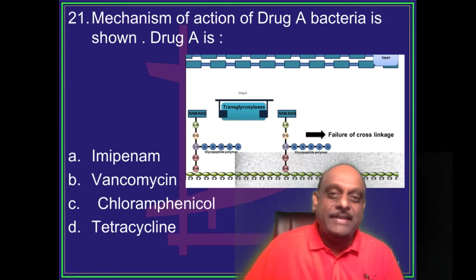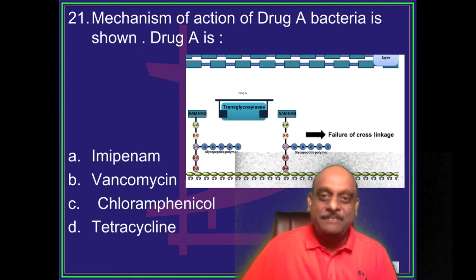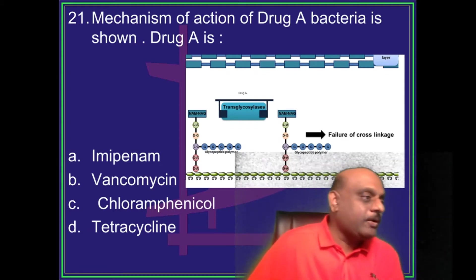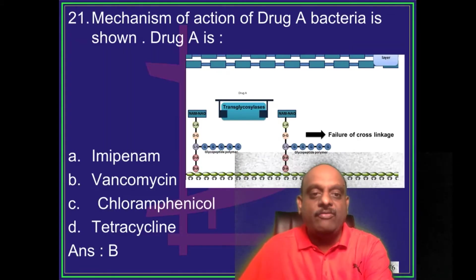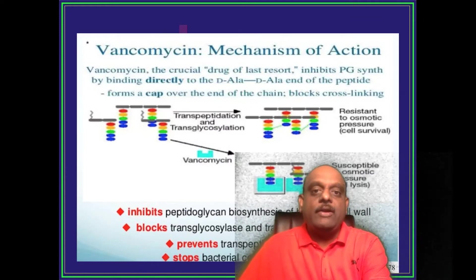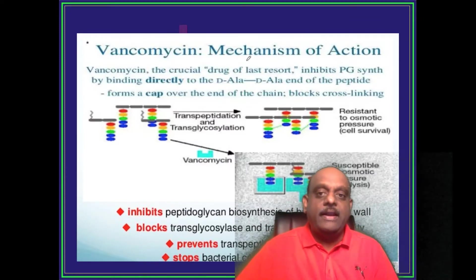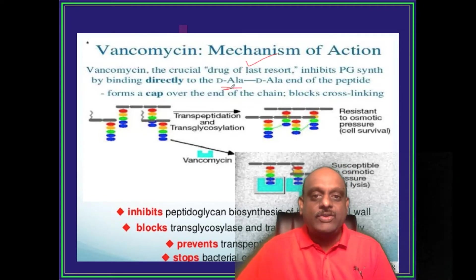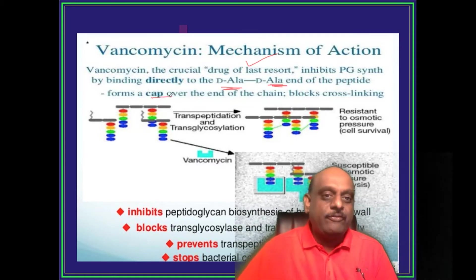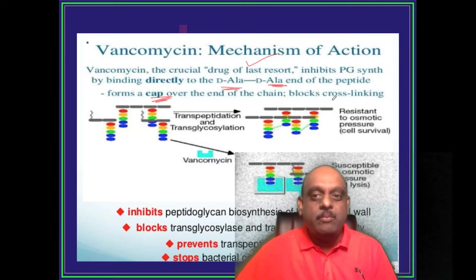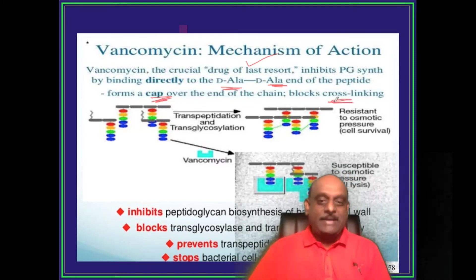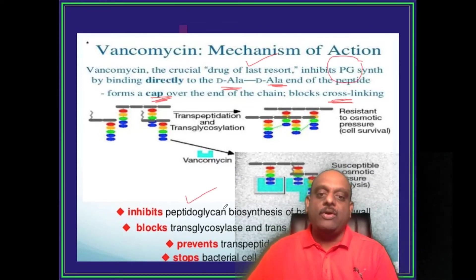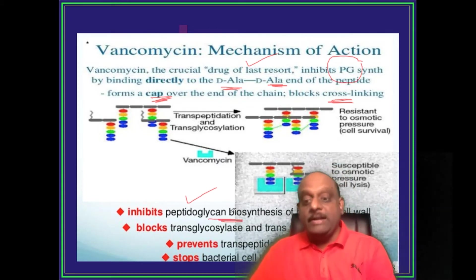Ranjit Shah proposes vancomycin, and most of you are absolutely right. Vancomycin is considered the drug of last resort. It acts on the D-Ala-D-Ala end of the peptide, forms a cap over the end of the chain, and blocks cross-linking. It inhibits peptidoglycan biosynthesis on the bacterial cell wall.